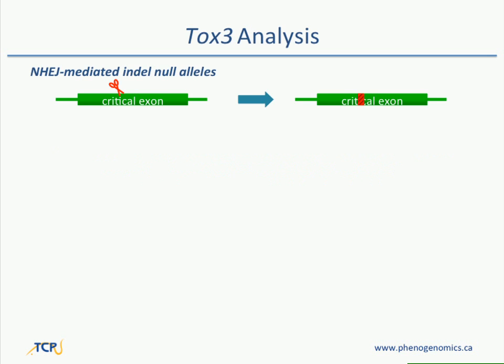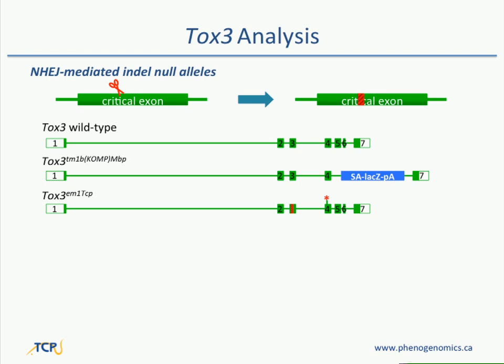The first thing we wanted to ask when this technology came on board was: are these CAS9-generated alleles phenotypically similar to ES cell-derived alleles? There was a lot of concern about potential off-target mutations with CAS9. So we looked at a gene called TOX3 that we'd put through our high-throughput phenotyping from an ES cell-derived perspective, and we made one of the first alleles by non-homologous end-joining mediated indel null allele. For this allele type, you use a single guide, repaired by NHEJ to introduce a frameshift two out of three times, then select a mutation that introduces a stop codon. The stop codon was introduced in exon IV.